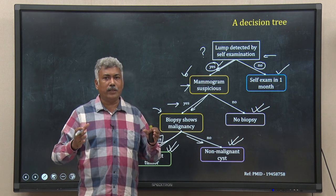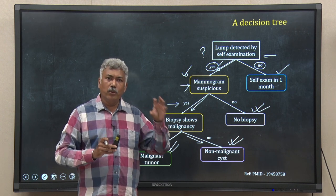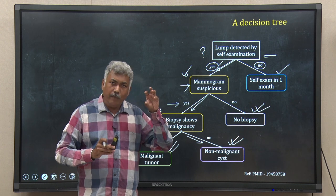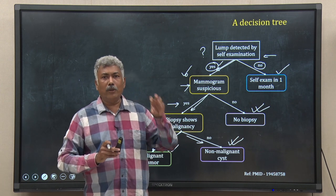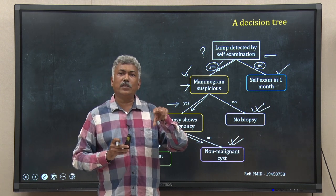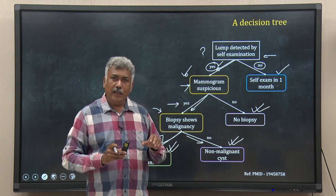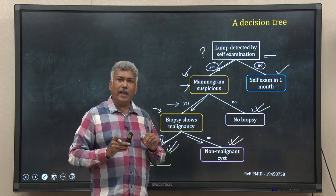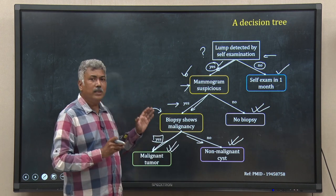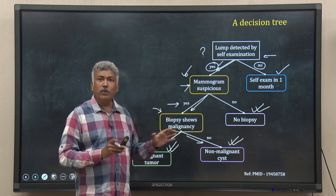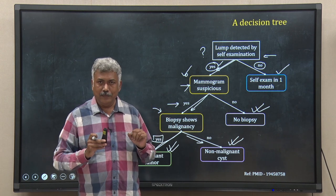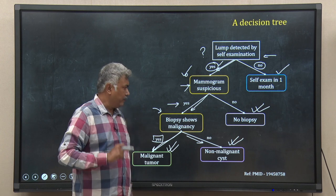It is a binary tree and it is made of nodes and edges. At each node, you are asking a question and that question has a yes/no answer. In a decision tree classifier, we will use this type of binary tree to classify data. Let us learn how we do that.